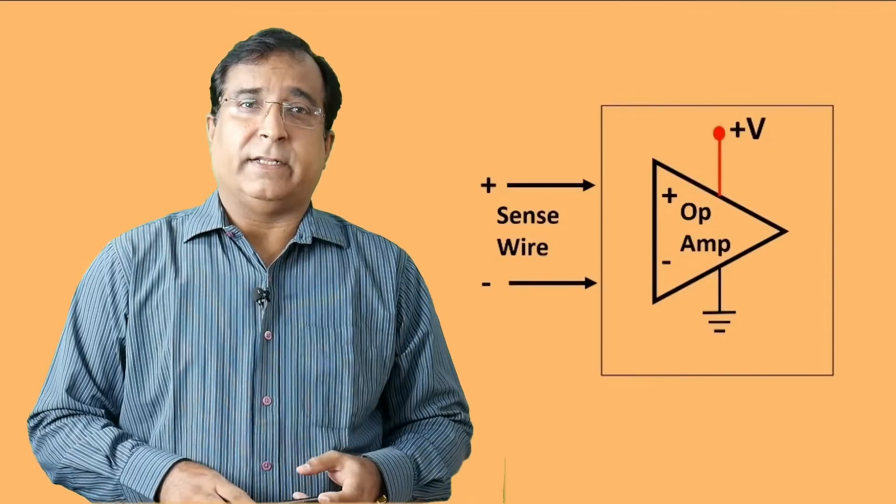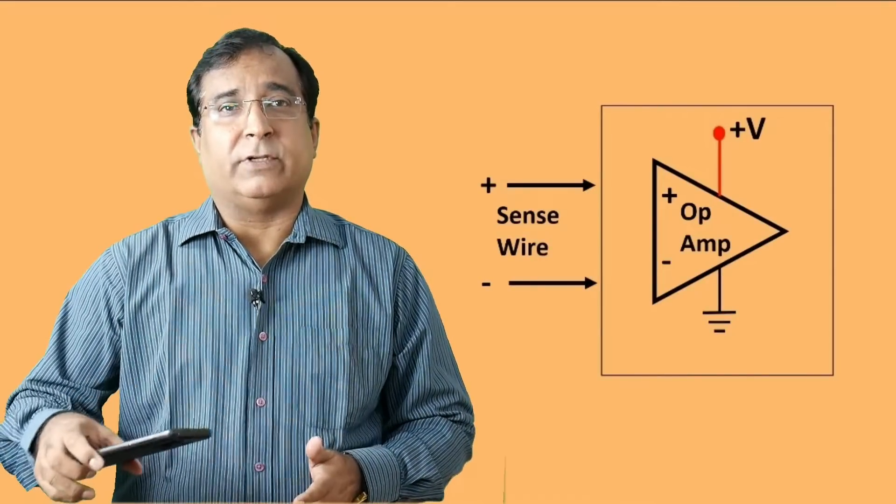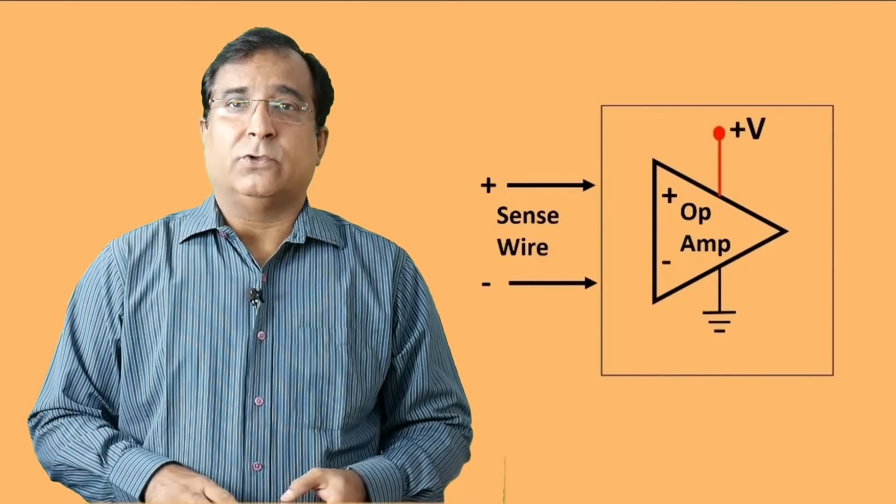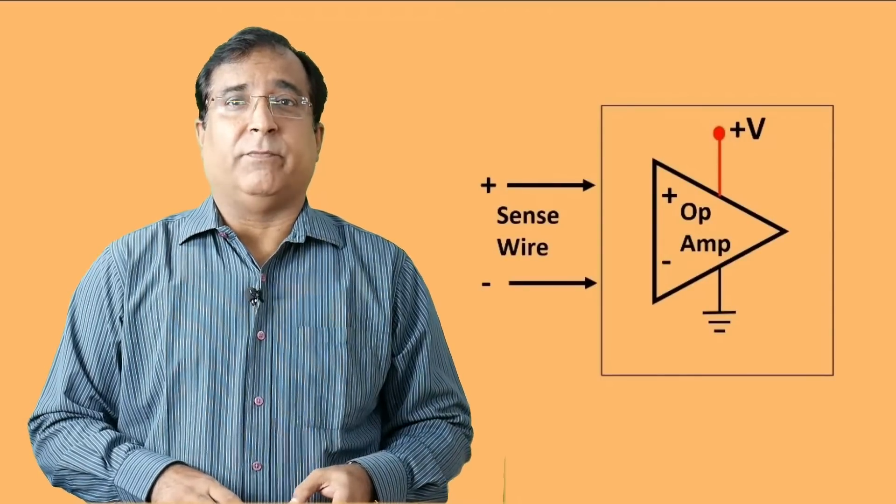These 2 sense wires are connected in the indicator inner circuit that checks how much voltage is actually reaching at the load cell. So that accordingly the weight measurement can be compensated for the voltage drop.